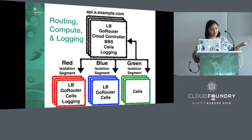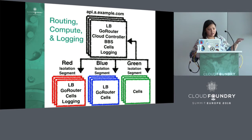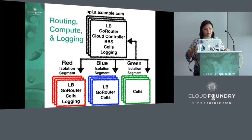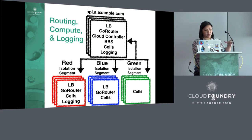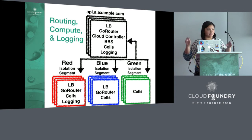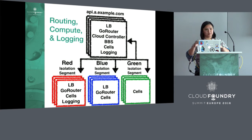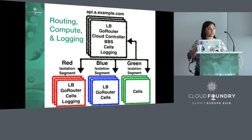A third type of isolation segment involves adding logging. Perhaps you have an organization that has compliance or security requirements that require application logs from a set of apps deployed to one segment to never be commingled with logs from another segment. If you have this particular use case, I'm very interested in talking to you so I can understand which aspects of logging need to be isolated. There are actually many components in the logging system, so there are many choices we could make there.